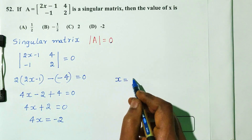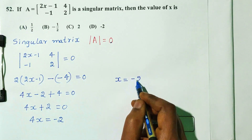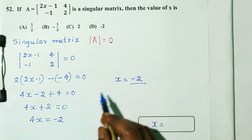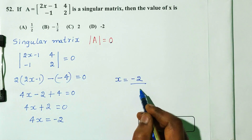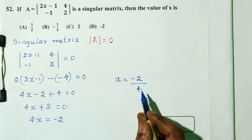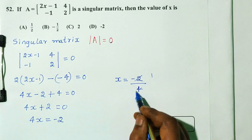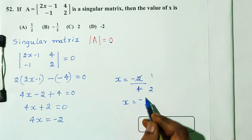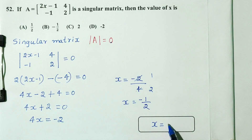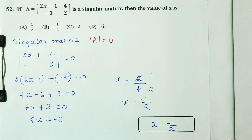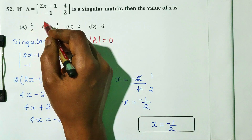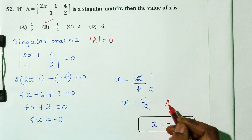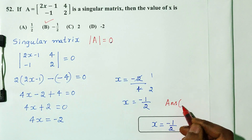So 4x equals minus 2, therefore x is equal to minus 1 by 2. The answer is minus 1 by 2, which is option B.